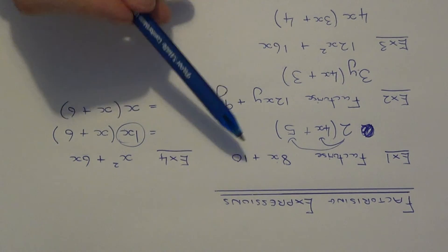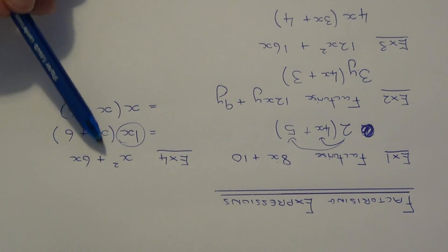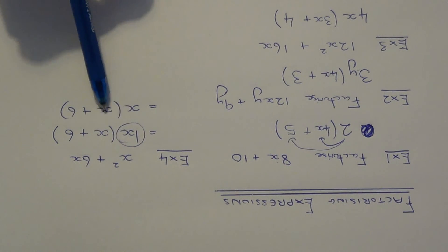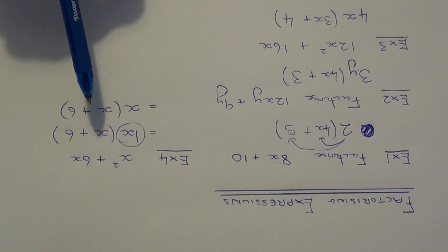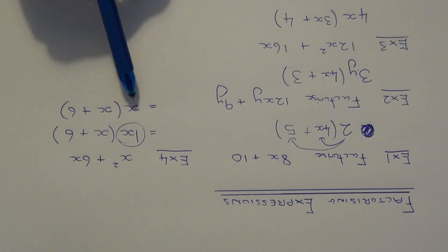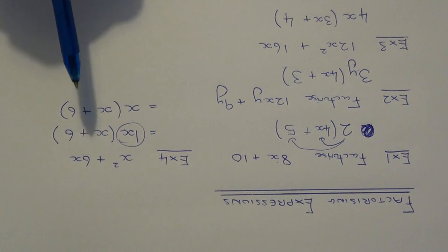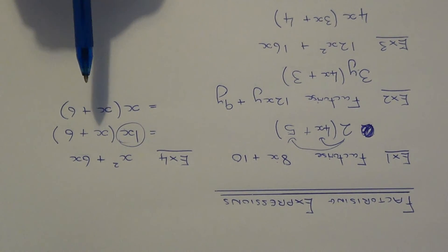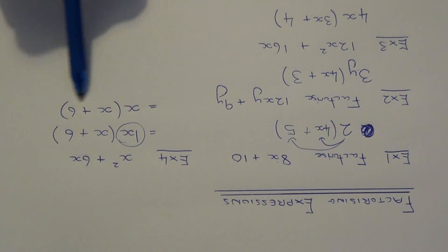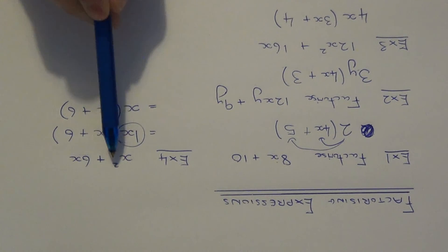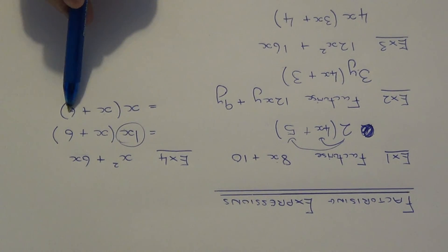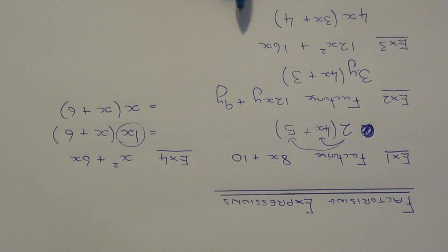For each example you can always check that the answer is correct by expanding the brackets once you've finished, because expanding is the opposite to factorising. So in the last example let's just check it: x times x is x squared, and x times 6 is 6x.